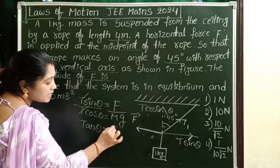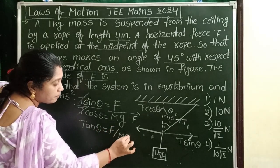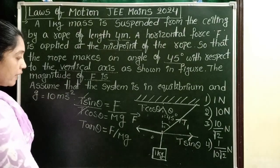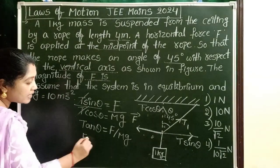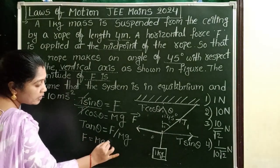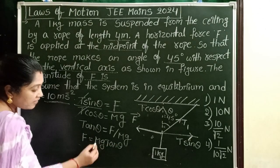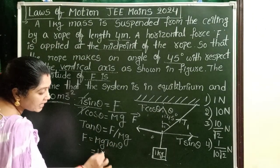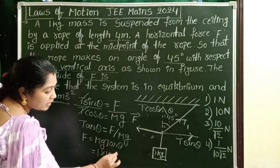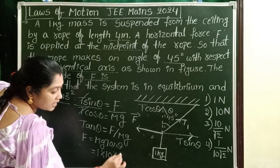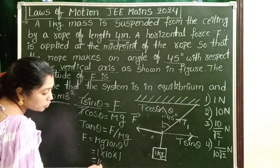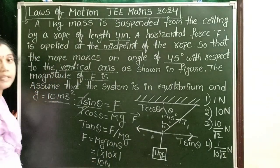So tan theta equals force by mg. Here we have to find out the magnitude of the applied force, then F equals mg tan theta. Given mass of the body is 1 kg and g value is 10, tan 45 degrees equals 1. So magnitude of the applied force is 10 N.